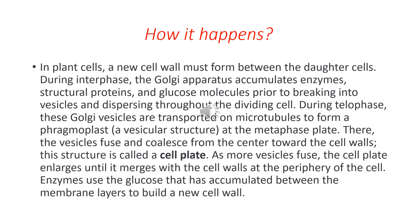In plant cells, a new cell wall must form between the daughter cells. During interphase, the Golgi apparatus accumulates enzymes, structural proteins, and glucose molecules before breaking into vesicles and dispersing throughout the dividing cell. During telophase, these Golgi vesicles are transported on microtubules to form a phragmoplast at the metaphase plate. There the vesicles fuse and coalesce from the center toward the cell walls, forming a structure called the cell plate. As more vesicles fuse, the cell plate enlarges until it merges with the cell walls at the periphery of the cell.